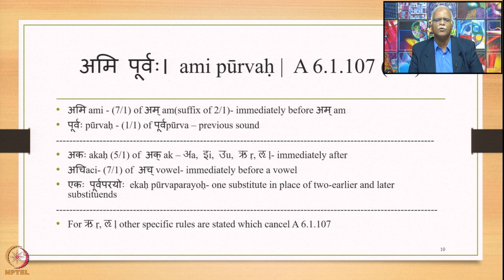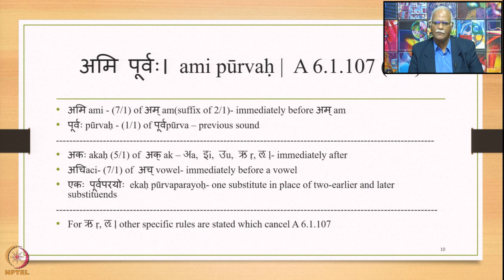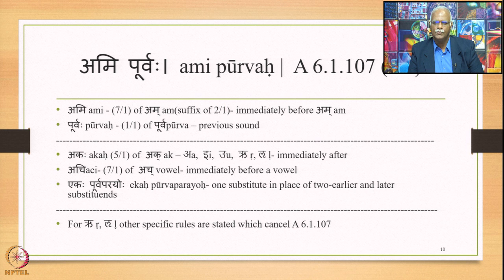Rupa continues from Engi Pararupam and connects with Purvaha, generating the interpretation Purvarupam. The other words continued in this Sutra are Akaha, the 5th case singular of Ak. Ak means the sounds A, E, U, Ru, and Lu — capturing the first two Pratyaharas and the sounds stated therein, these five vowels. So Akaha means immediately after these five vowels. Akhi is the 7th case singular of Akh, meaning a vowel — that is, immediately before a vowel.